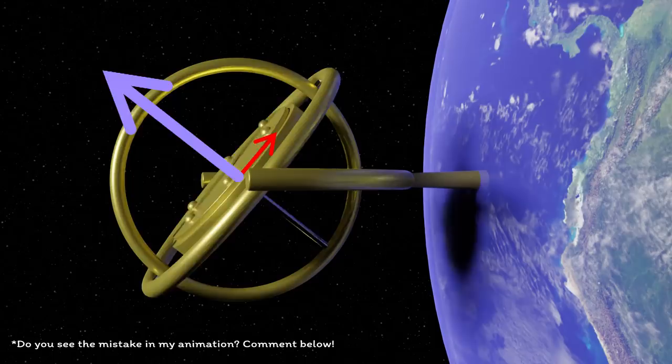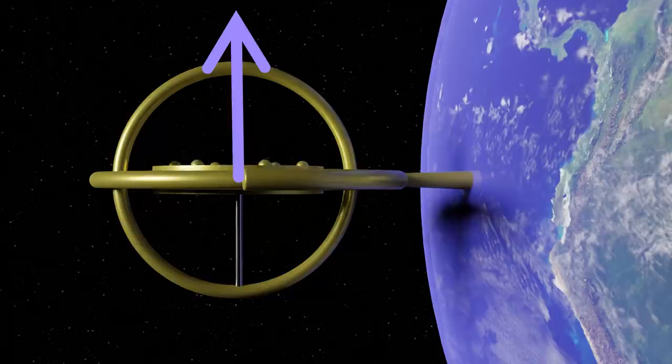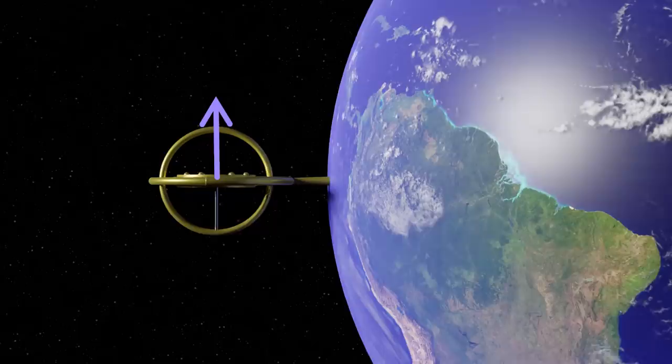All the while the earth spins you continue to resist that spin by applying a force which creates a torque slowly precessing the gyroscope. The only time it's going to stop is when the torque from the gyroscope and the torque that you apply are lined up.